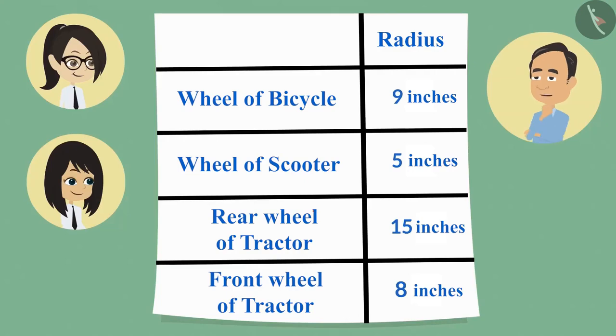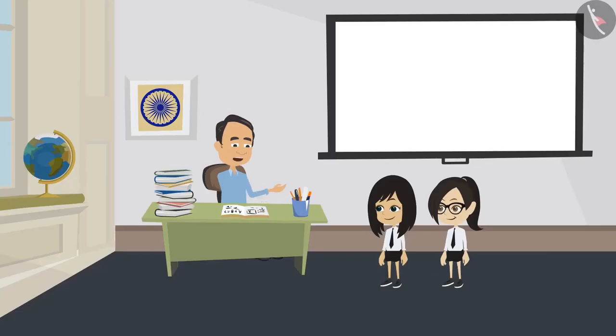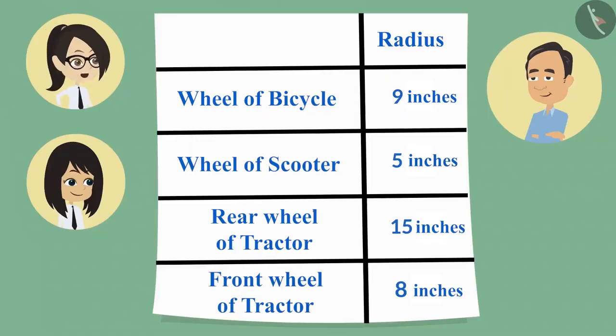Yes, your measurements look right. Which wheel had the largest circle? The rear wheel of the tractor had the largest circle.